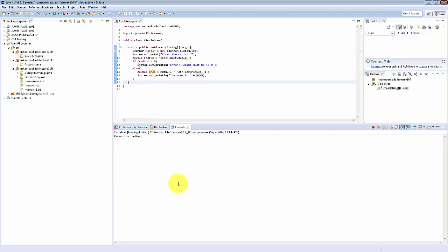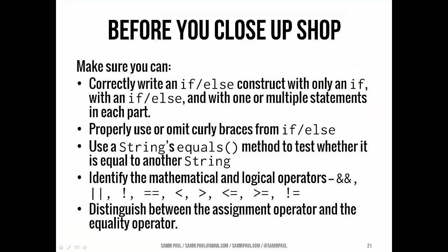Let's run it. Enter the radius — say 7 units — and the area is 153.94. Before we close up, a couple of things to make sure you can do: write an if-else construct with an if by itself or with an if and an else, with one or more statements in each part; use or omit curly braces appropriately; use the equals method to test whether one string equals another; use mathematical and logical operators to build boolean expressions; and tell the difference between the assignment operator and the equality operator.